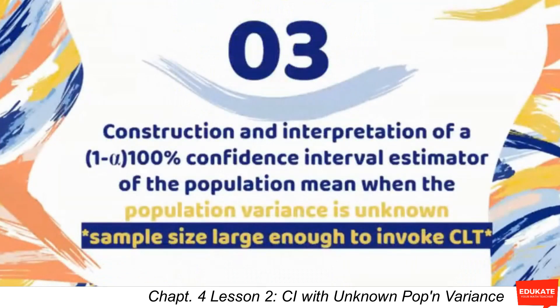Now, what about the construction and interpretation of the confidence interval estimator of the population mean when the population variance is unknown, but the sample size is large enough to invoke the Central Limit Theorem?